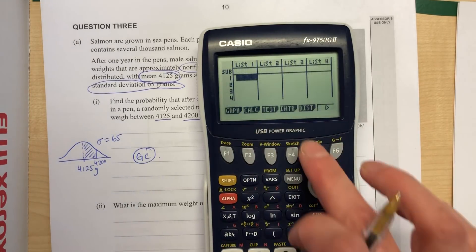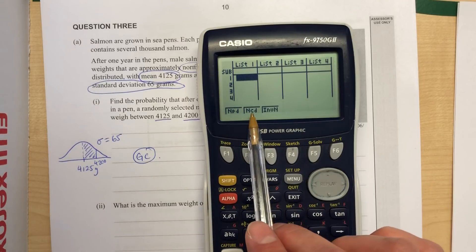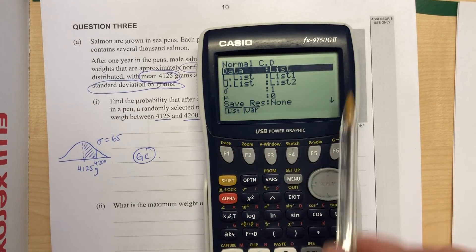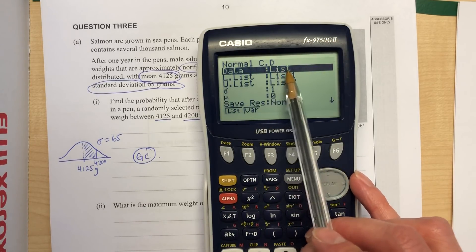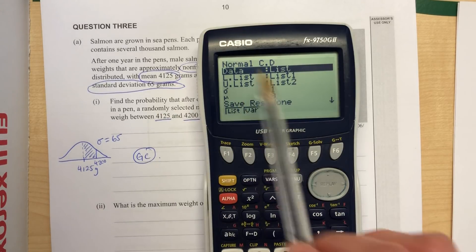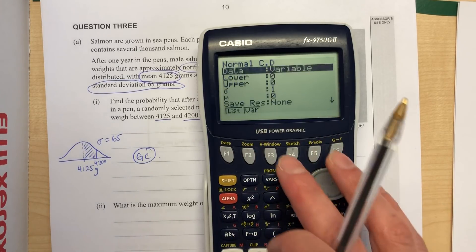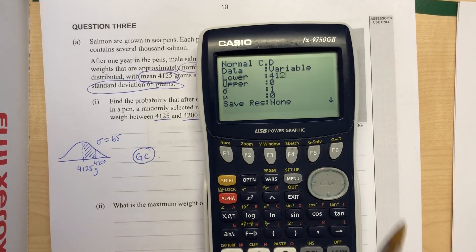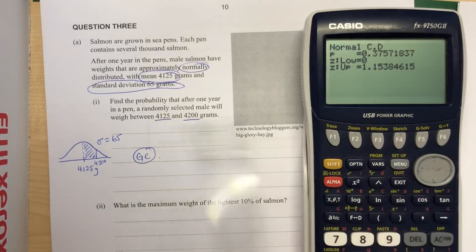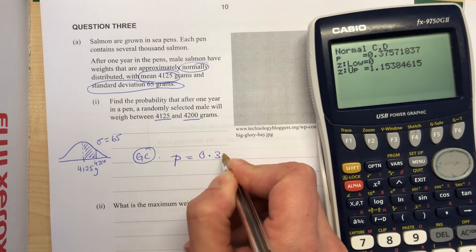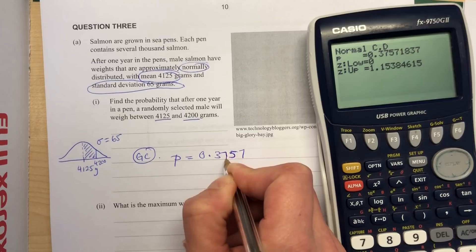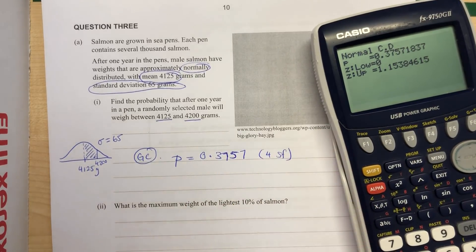So whoever's marking my paper knows I've done it on the graphics calculator. We go to our stats menu there, distributions, we're doing a normal and we're doing the straightforward one, so it's this one in CD. Now my calculator has been reset, so I need to make sure I change that. We don't have values in a list on the previous page. We need to put the variables in, so I need to select variables there, F2. Okay, my lower limit over here was 4125, the upper is 4200, the standard deviation is 65, and the mean 4125, and then execute. And here is my probability. So the probability equals 0.3757. And with these normal distributions, we're going to go to four significant figures.